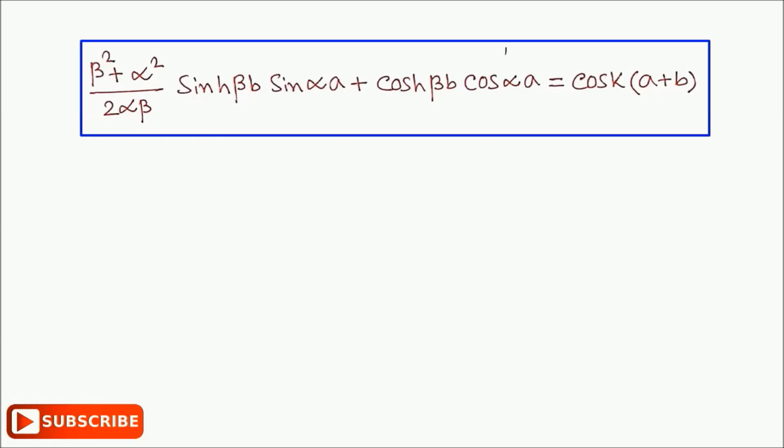To simplify this equation, Kronig and Penney considered the case when V₀ tends to infinity and b approaches zero, but the product V₀b remains finite.